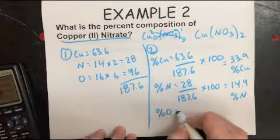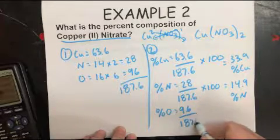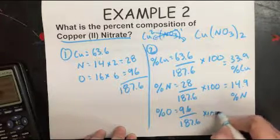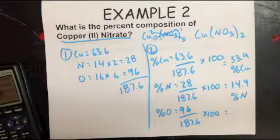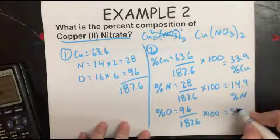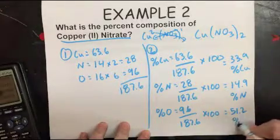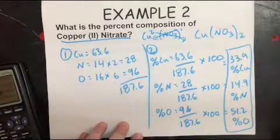And then last, oxygen. Same exact thing. So 96 divided by 187.6 times 100 equals 51.2% oxygen. So these three things are your answers to this problem.